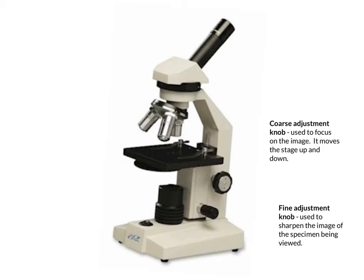The next pieces are the two knobs on the microscope. Depending on the model, they can be two separate knobs or stacked together — one large on the bottom and a smaller one on top. The coarse adjustment knob is the larger of the two and is used to focus on the image, moving the stage up and down until the specimen comes into view. The fine adjustment knob, the smaller of the two, is used to sharpen the image of the specimen being viewed.